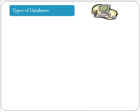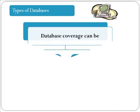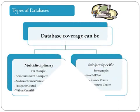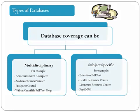Let us take a look at the different types of databases. Some databases, like Academic Search Premier and ProQuest Central, are multidisciplinary databases that cover various subjects. Subject-specific databases usually cover one discipline. Examples include Education Full Text, Literature Resource Center, and PsycINFO.